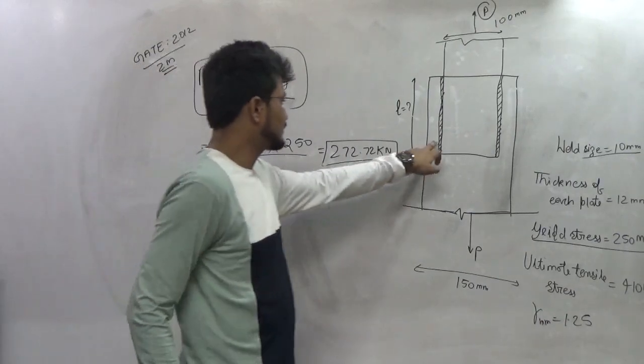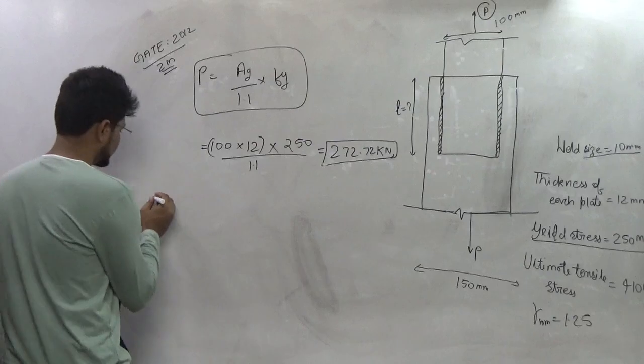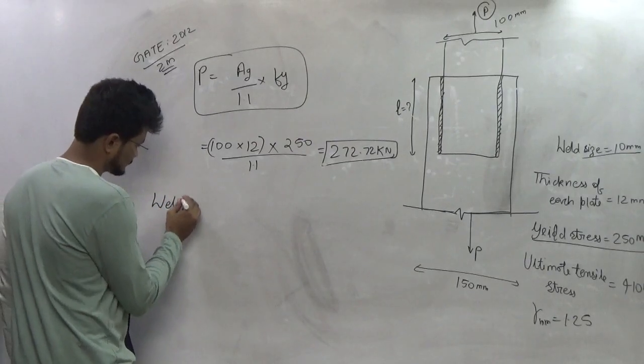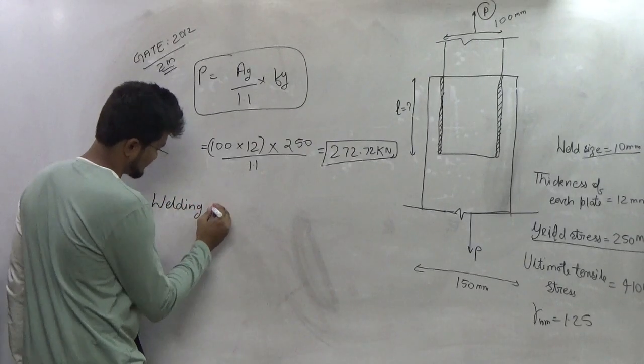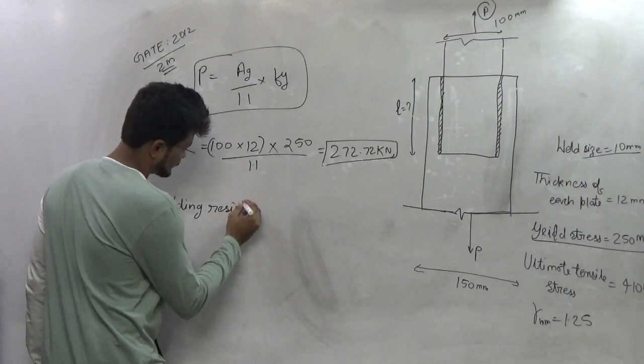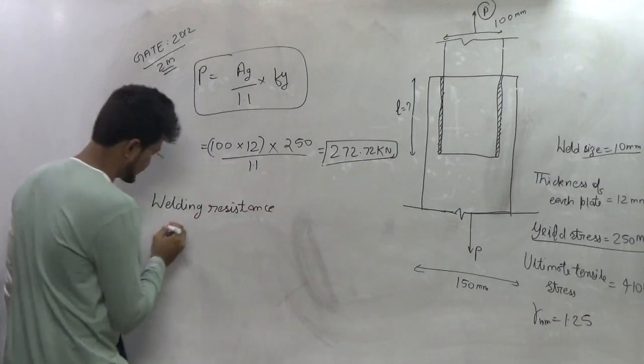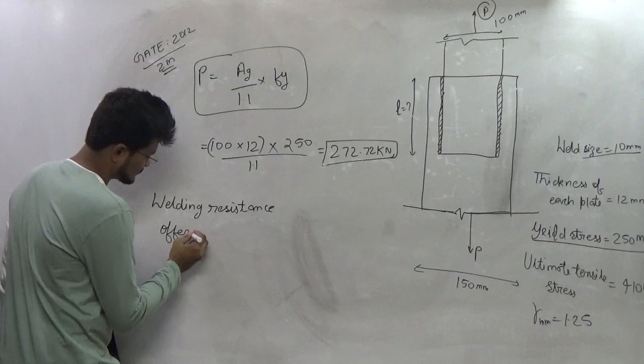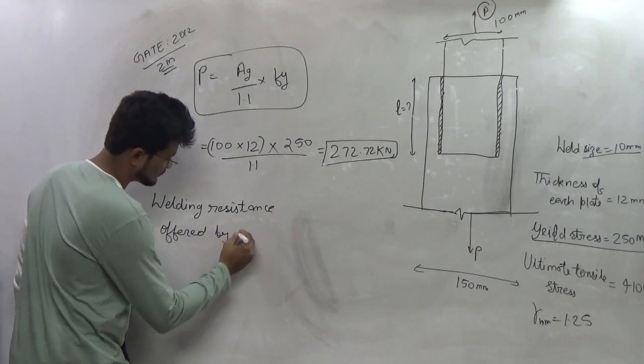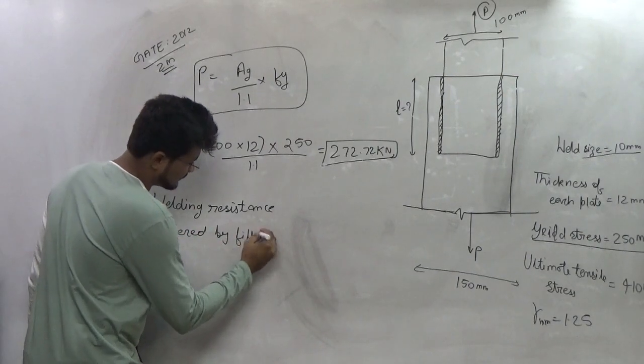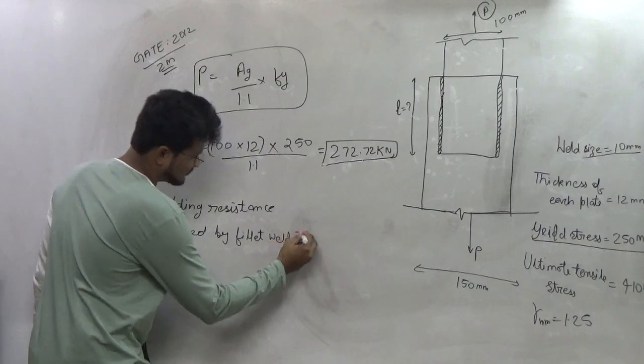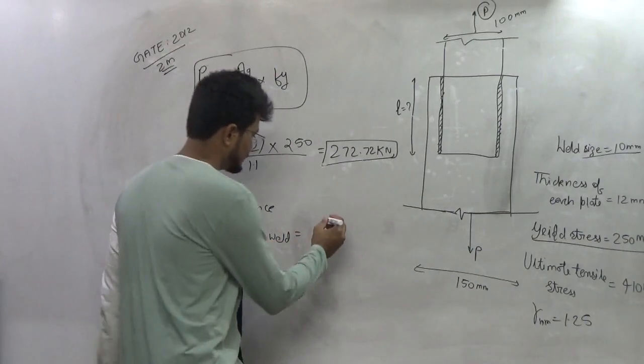First what we will do, we will calculate the welding resistance. So welding resistance offered by fillet weld will be equal to, now the formula is given by